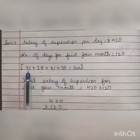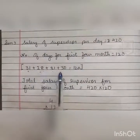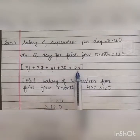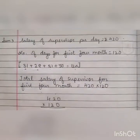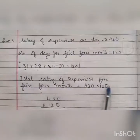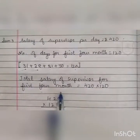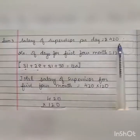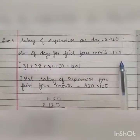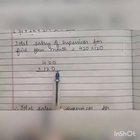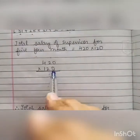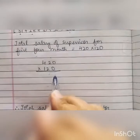We have the salary for 1 day and we want to find out the salary for 120 days. Total salary of the supervisor for the first 4 months is equal to 420 multiplied by 120. Here 420 is the per day salary and 120 is the number of days.